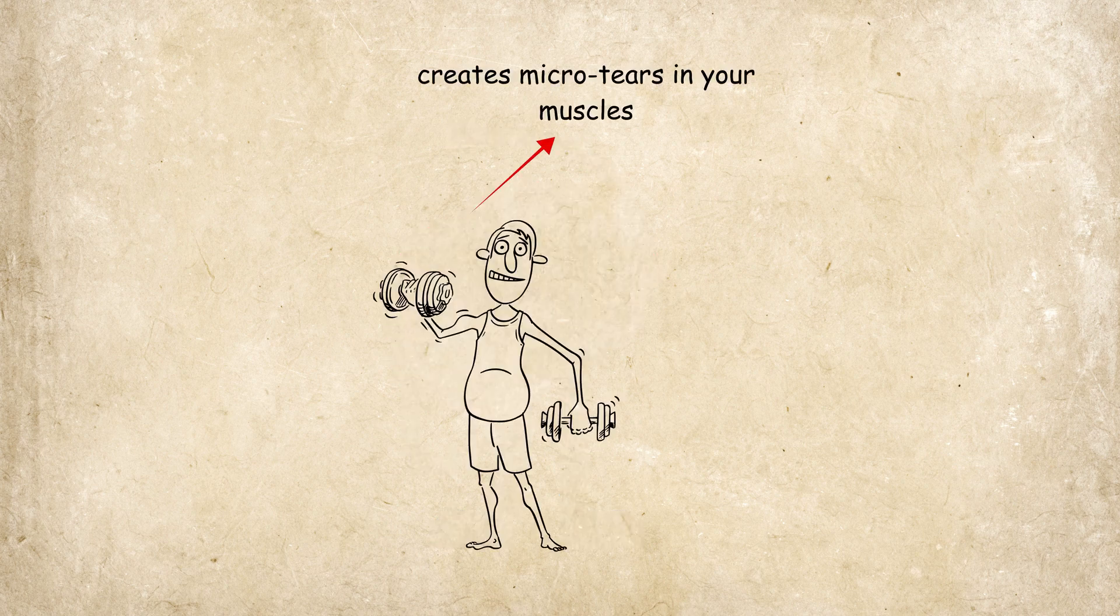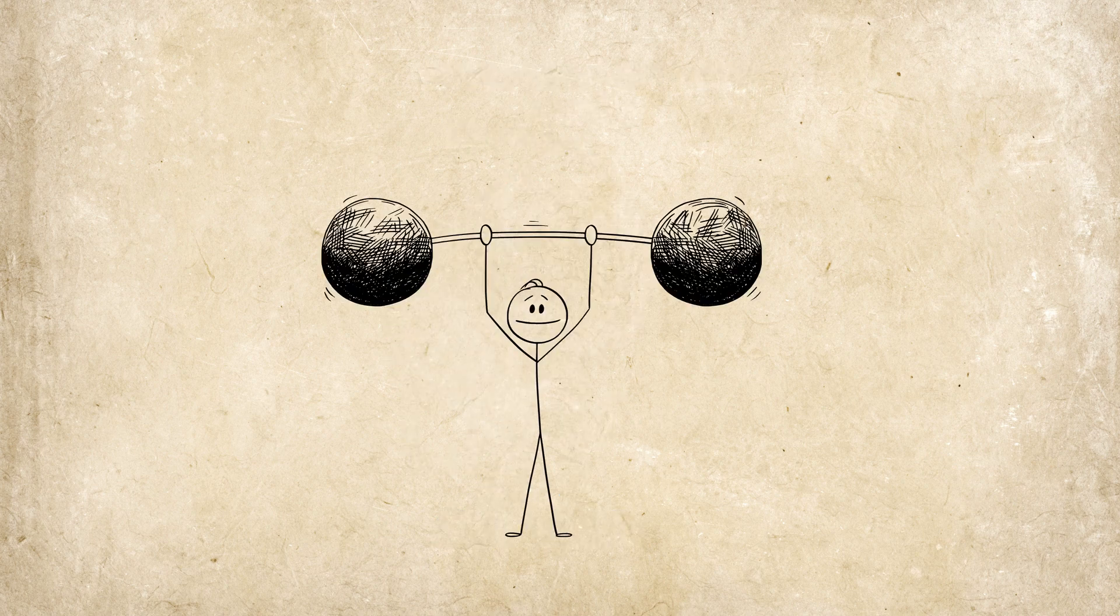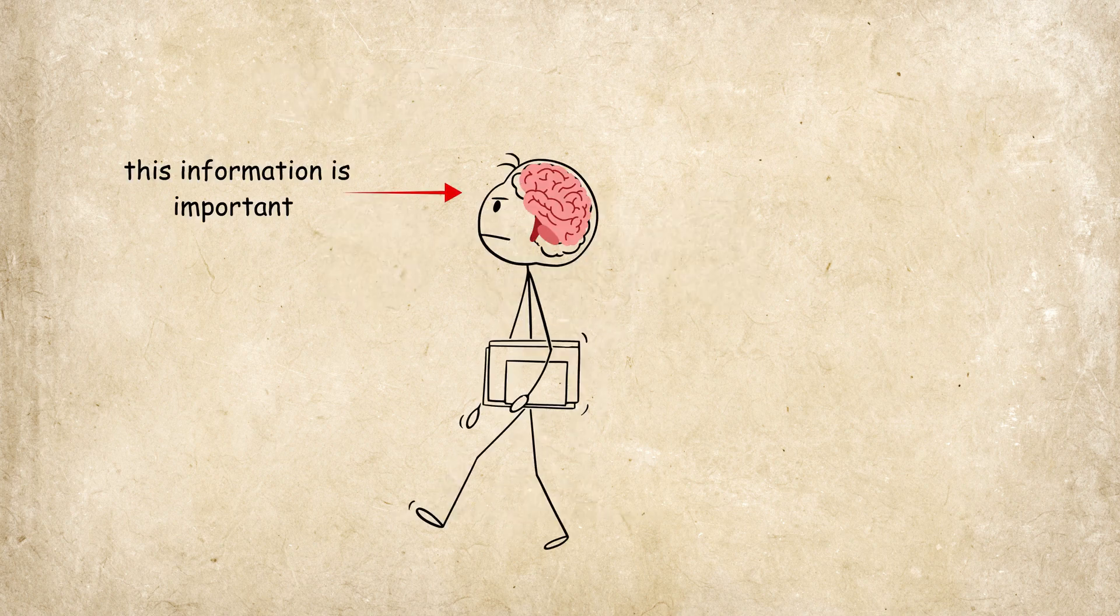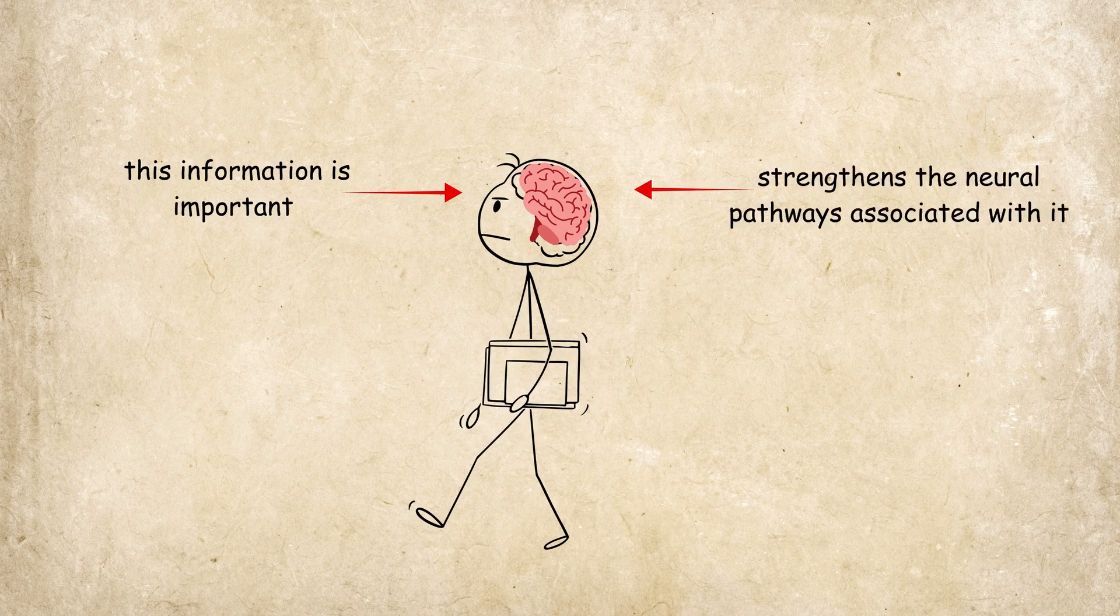Lifting weights creates micro-tears in your muscles, which then grow back stronger. Similarly, the struggle to recall information signals your brain that this information is important and strengthens the neural pathways associated with it.